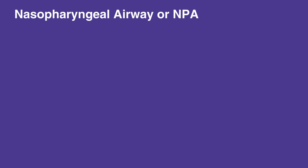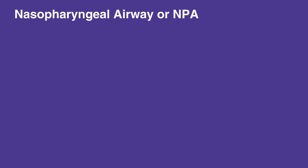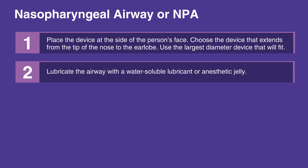To insert a nasopharyngeal airway, or NPA, place the device at the side of the individual's face. Make sure to choose a device that extends from the tip of the nose to the earlobe. Use the largest diameter device that will fit.